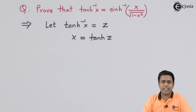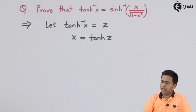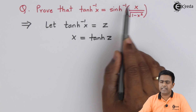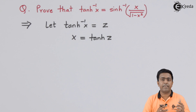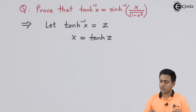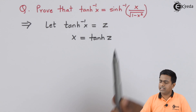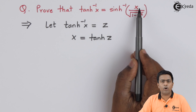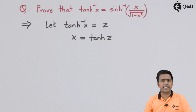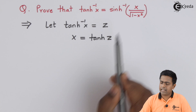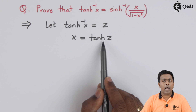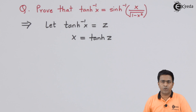Now we have the value of x and we can use it on the right hand side to show the relationship. On the right hand side the argument is x / √(1 - x²), so here we substitute x as tanh(z).